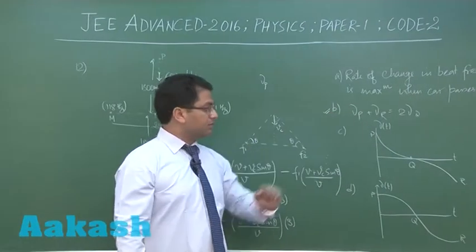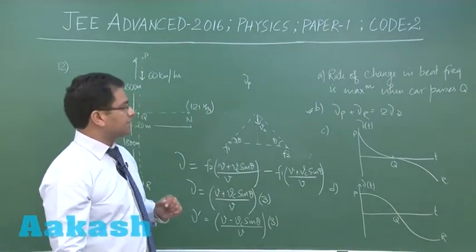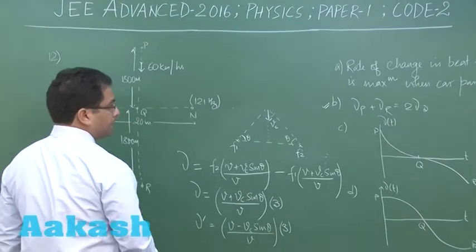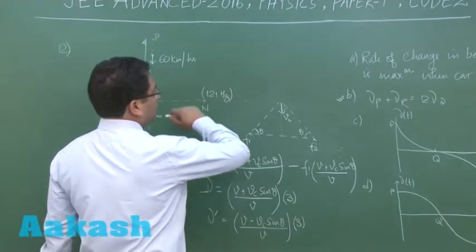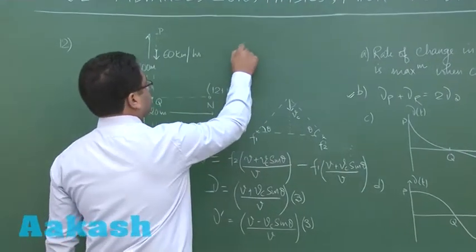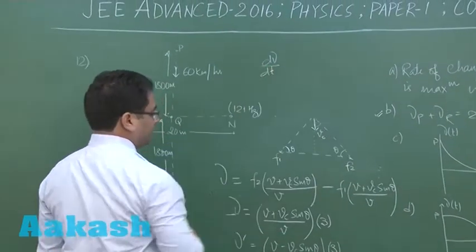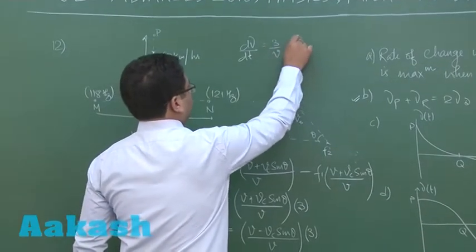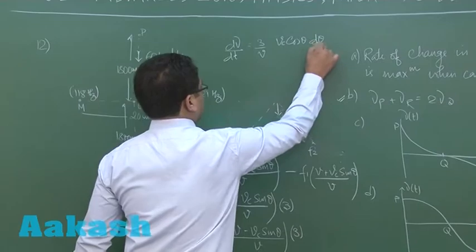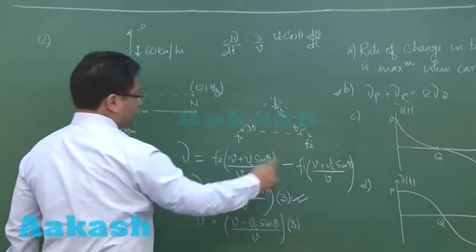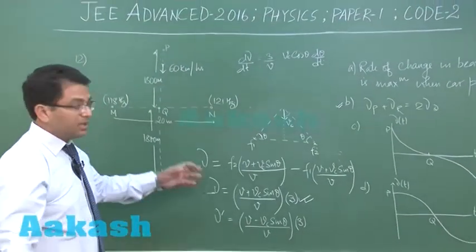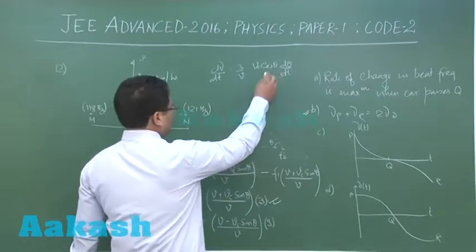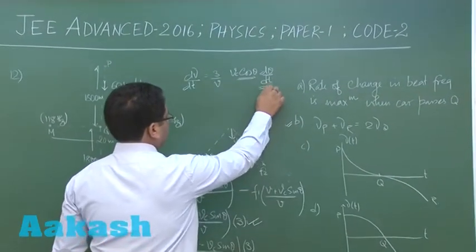Even option number A seems to be correct in a very nice way. It says rate of change in beat frequency. So let's see this is the beat. Now rate of change of beat frequency that would be d nu by dt, that's a rate. And this comes out to be phi by V into Vc cos theta d theta by dt. What I did is that I simply differentiated this. This was the beat frequency detected as a function of position and this is the case. Now there are two variables which is cos theta and d theta by dt.